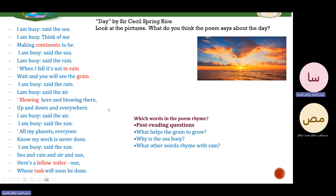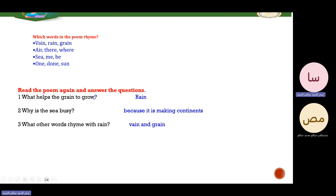Which words in the poem rhyme? Rhyming means the endings of lines have the same sound. For example: sea, me, be — long E sound. Rain, vain, grain — 'ain' sound. Air, there, everywhere — 'air' sound. Sun, one, done — 'un' sound. After reading the poem: what helps the grain to grow? Rain. Why is the sea busy? Because it's making continents. What other words rhyme with rain? Vain and grain.